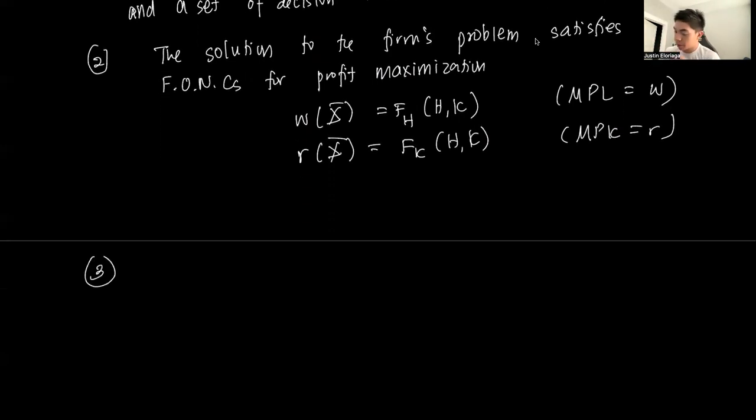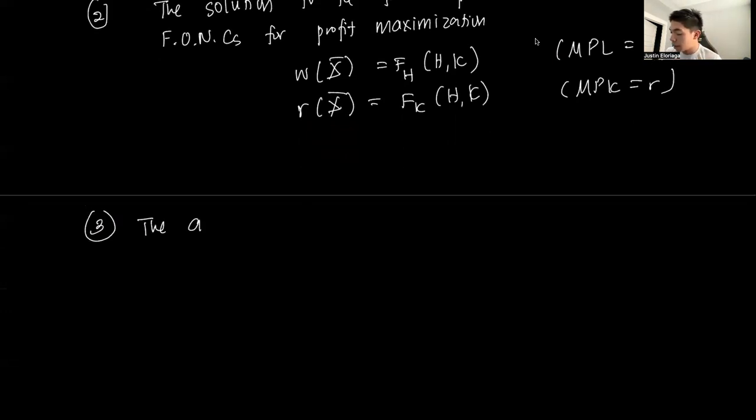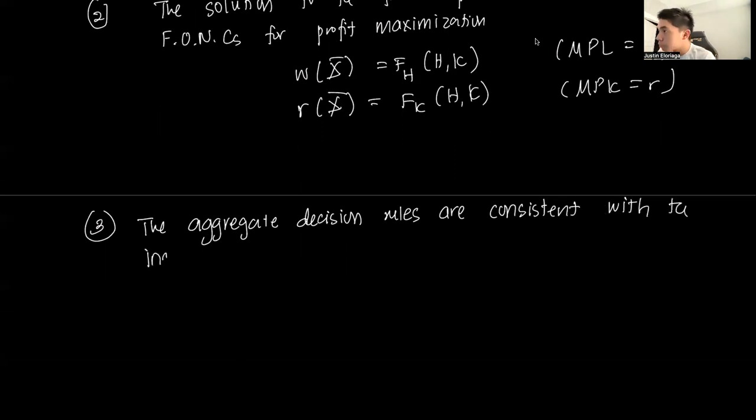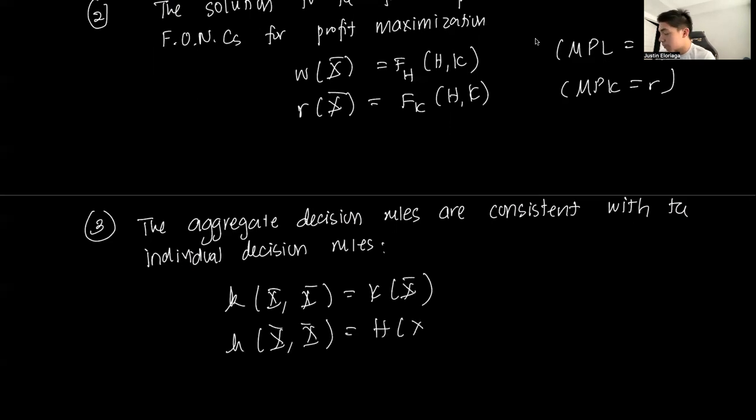Three: the aggregate decision rules are consistent. That just basically means that K(X,X) equals K(X,X), and H(X,X) equals H(X). The idea is just that if we sum up all the individual small k and small h, we get the aggregate.